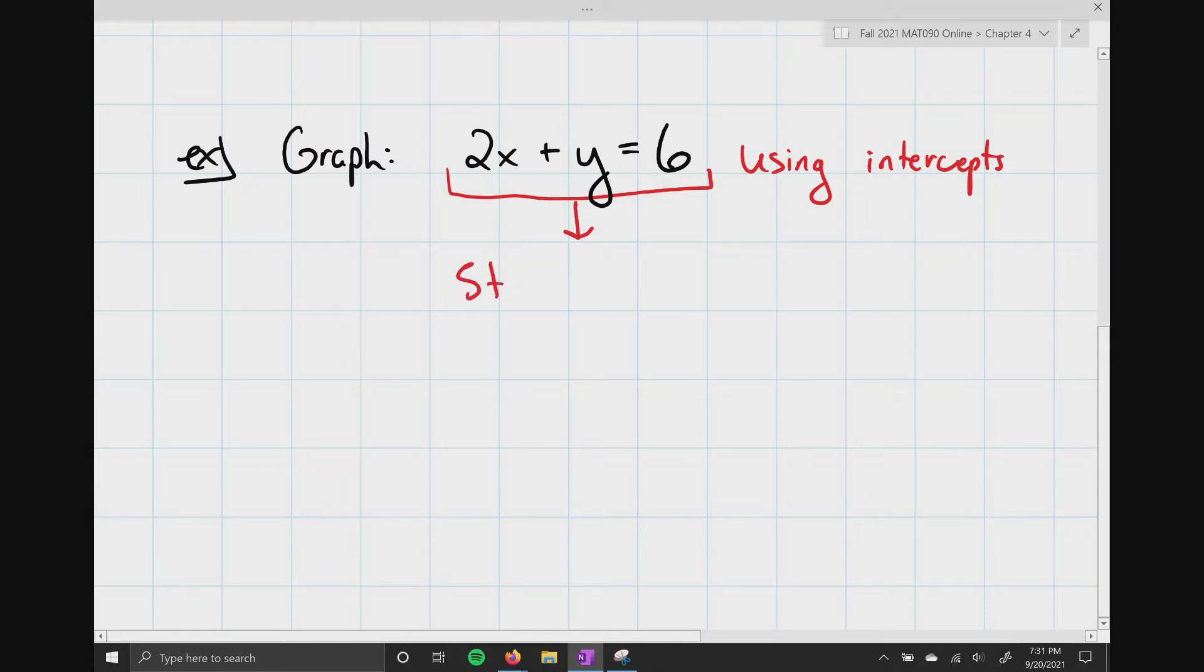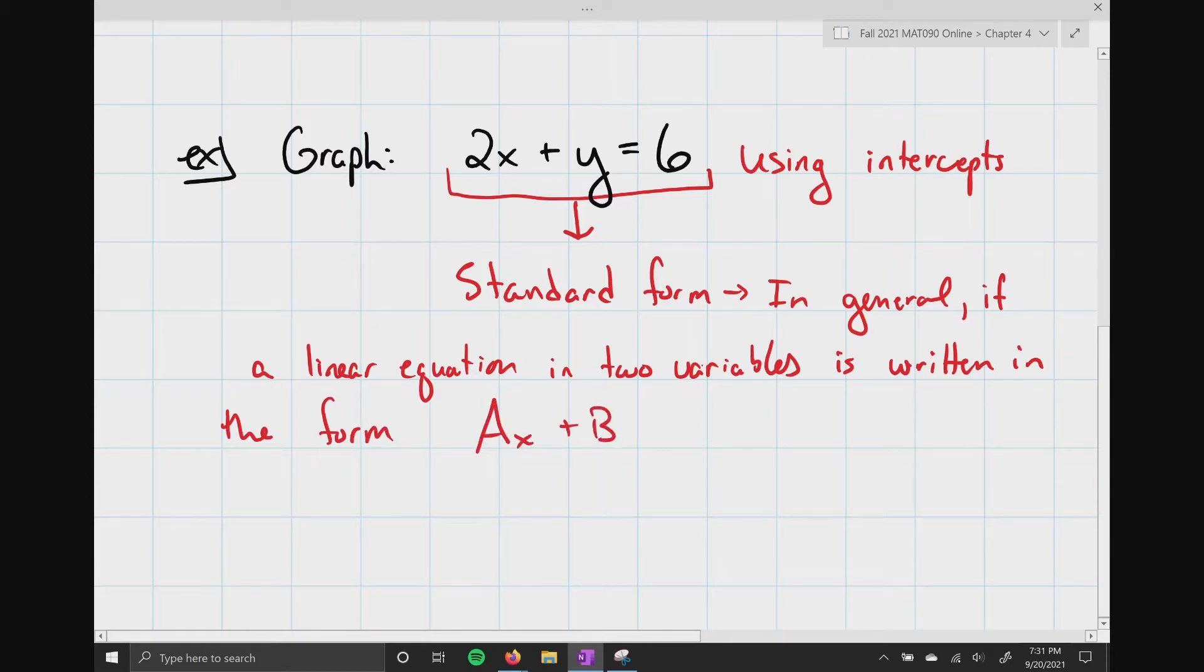This is called standard form. And, in general, so I guess maybe I'll just write an arrow. In general, if an equation, let me be more specific. If a linear equation in two variables is written in the form ax plus by equals c, where both a and b are not 0, then we have standard form.